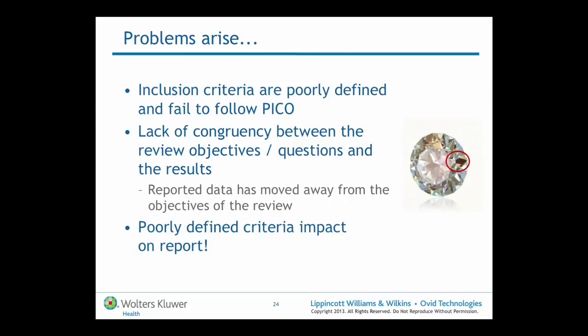Some of the other problems that arise if we aren't making that transition from question to PICO, and if inclusion criteria are poorly defined and reviewers fail to follow that process, is a lack of congruency — sometimes between the review objectives, the questions being asked, and the results being presented. This really does impact on the output of the research process.